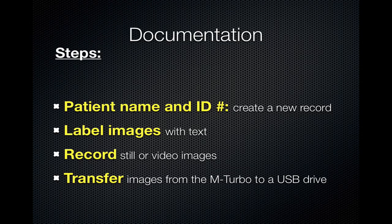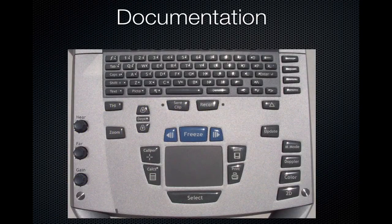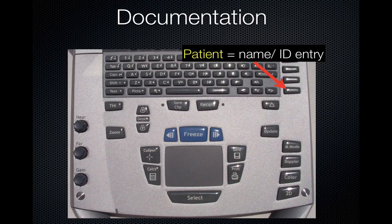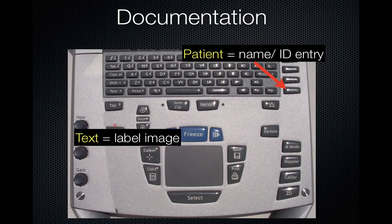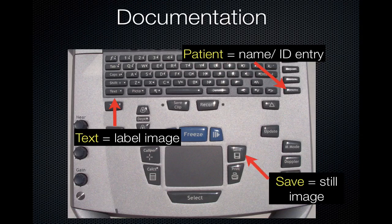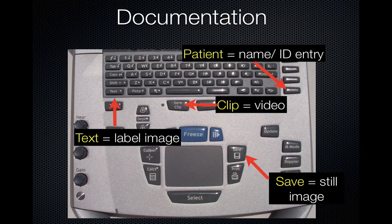Here is a demonstration. The Patient button, when pressed, provides a screen that allows you to enter the name and identification number. The Text button, when pressed, allows you to type from the keypad onto the image on the screen. The Save button will save a still image or screenshot. The Clip button will record a clip ranging between 2 seconds and 30 seconds — generally 4 seconds is the recommended length.